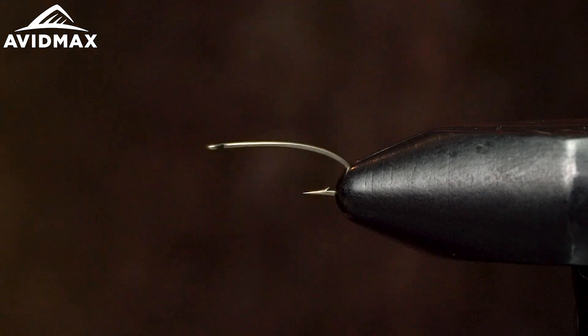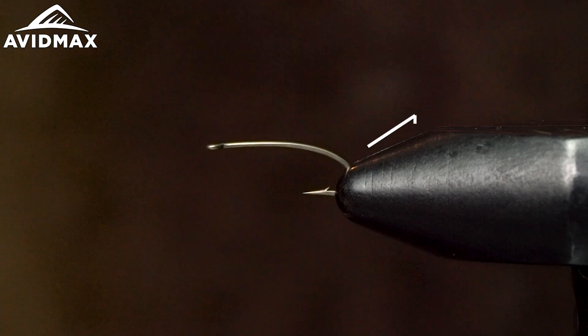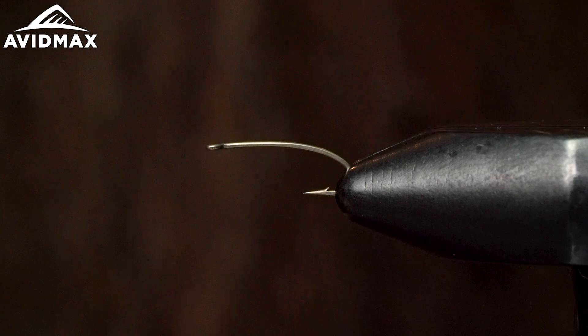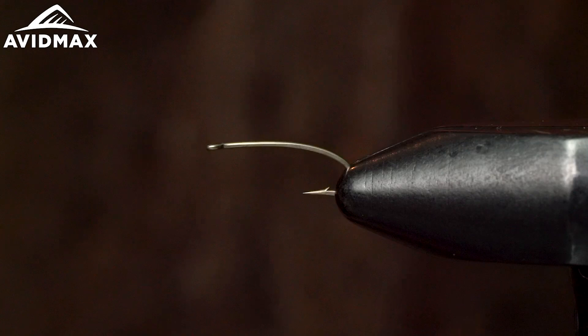I'm going to be utilizing some Semperfly materials and we're tying on the Daiichi 1270, this is a size 18. I'm just doing an 18 so it's a little bit easier for you guys to see, and I'll kind of include some tips in there that might help you tie it a little bit easier in some smaller sizes.